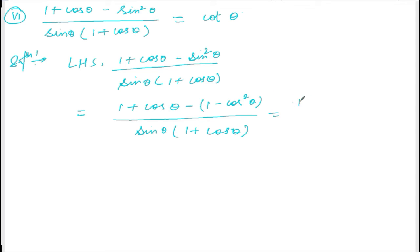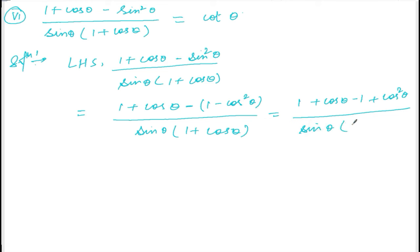Breaking down: 1 + cosθ minus (1 - cos²θ) divided by sinθ(1 + cosθ). The 1 and -1 cancel out, so what's left is cosθ + cos²θ. Taking cosθ as common factor gives cosθ(1 + cosθ).